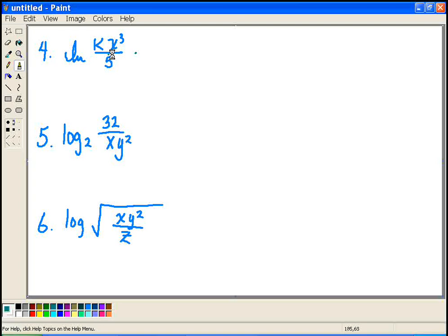The first thing I want to look at is getting rid of this division sign. And that's pretty much going to be your first step. So you want to get rid of the division. So remember, division goes hand in hand with subtraction. So I can rewrite this, the natural log of my numerator, which is kx cubed, minus the natural log of my denominator, which is 5.